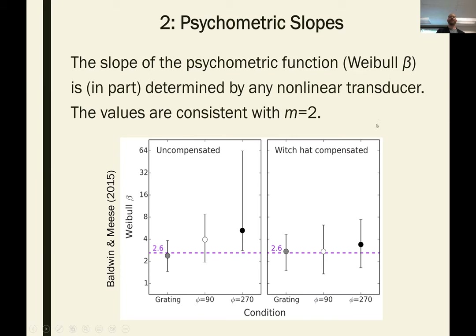The other source of evidence is that there is a nonlinear transducer — which means that probability summation would predict an eighth-root slope, which is too little summation. The evidence for a nonlinear transducer is that the psychometric slopes — the slope of the psychometric function determining how quickly we go from guessing to asymptotic performance — are consistent with square-law transduction of contrast. With square-law transduction, the prediction is a beta of 2.6; if it's linear, beta is 1.3, and it's multiplied by whatever the transducer exponent is. From the 2015 study data, the beta is pretty much exactly 2.6, which aligns nicely with the transducer model.